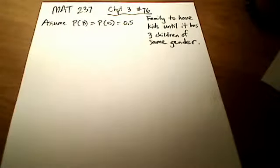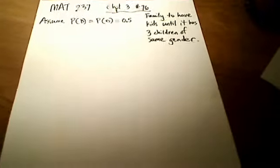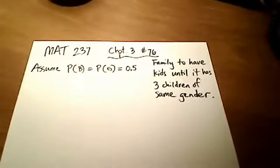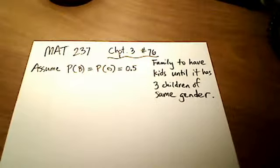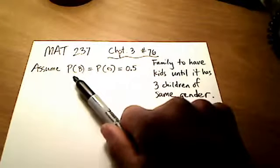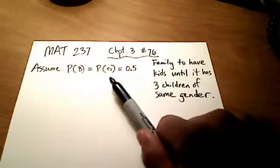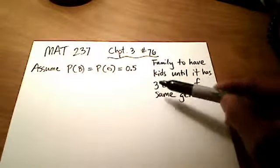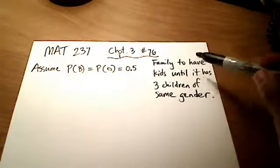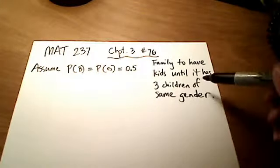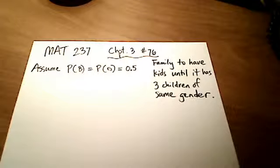This is chapter 3, question number 76. The question states: a family decides to have children until it has three children of the exact same gender. We're assuming the probability of having a boy is the same as the probability of having a girl, both 50%. So the family keeps having kids until it has three children of the same gender.